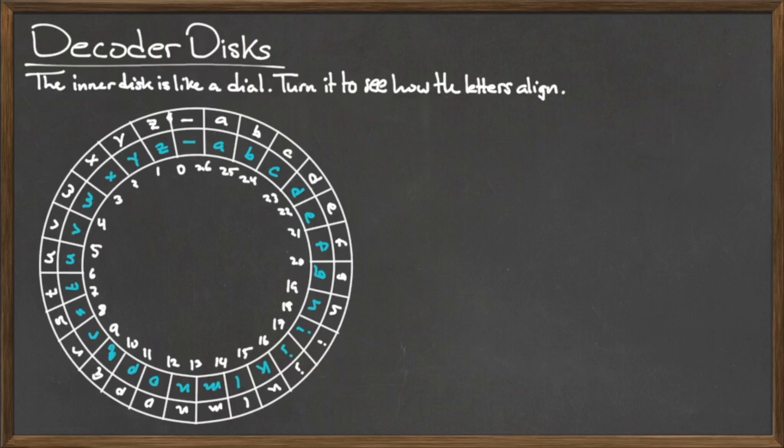The Caesar cipher works by cyclically shifting the alphabet by N letters, where N is a natural number, and is best visualized through the use of a decoder disk. The decoder disk consists of two circular disks which contain all of the elements from the set Blackboard A, which is the character space and the 26 letters of the alphabet.